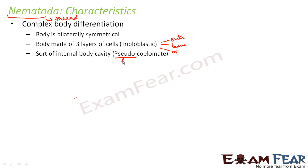What does the word pseudo mean? Pseudo means false. So that means they do not actually have a proper true internal body cavity, but they have some kind of cavity which gives the appearance of a coelom. That is why they are said to have a pseudocoelom — a false coelom — which gives the appearance of a coelom but is not actually one. So these organisms have a system level of organization.